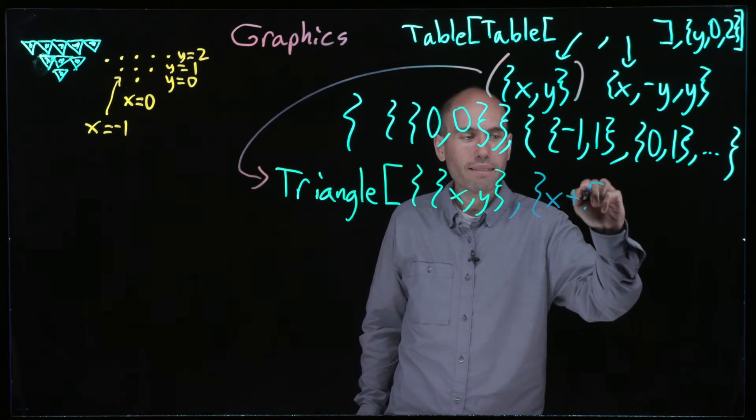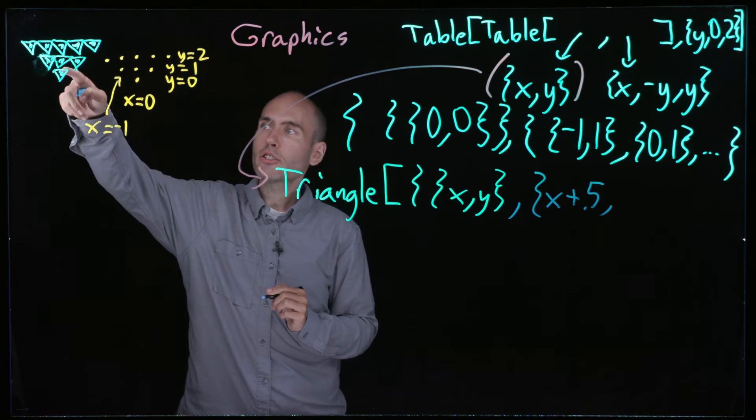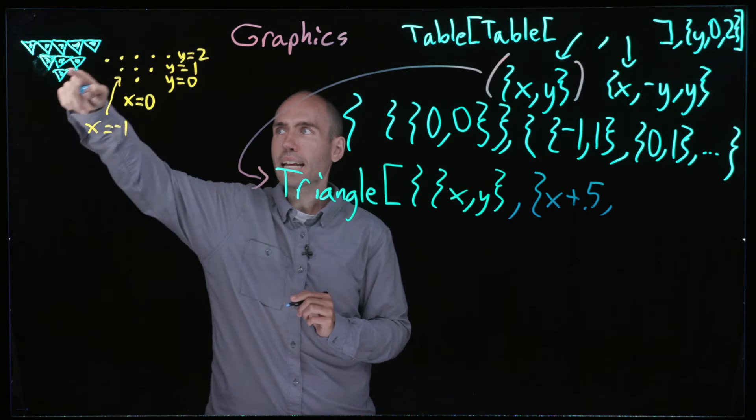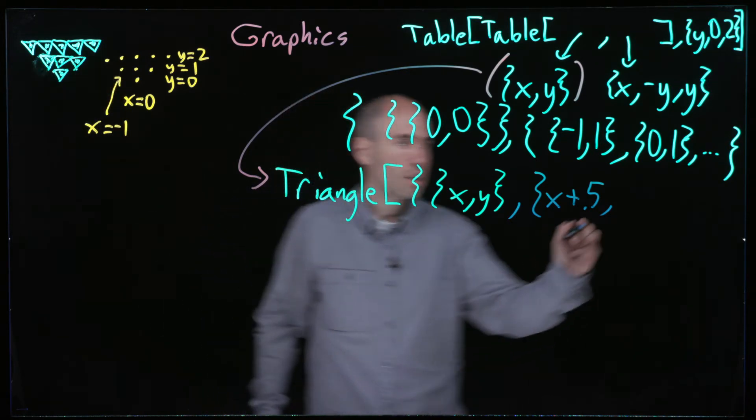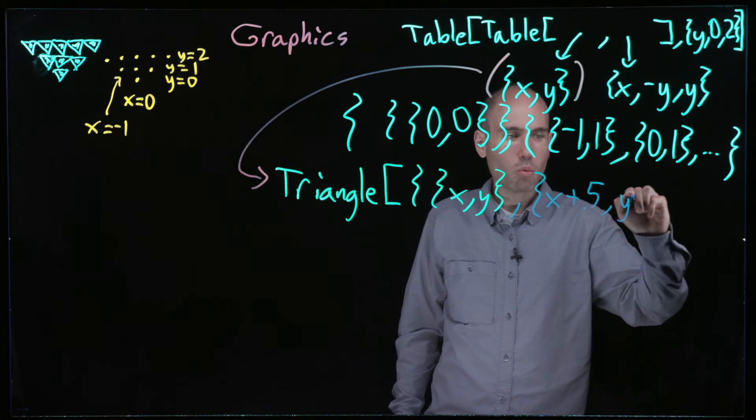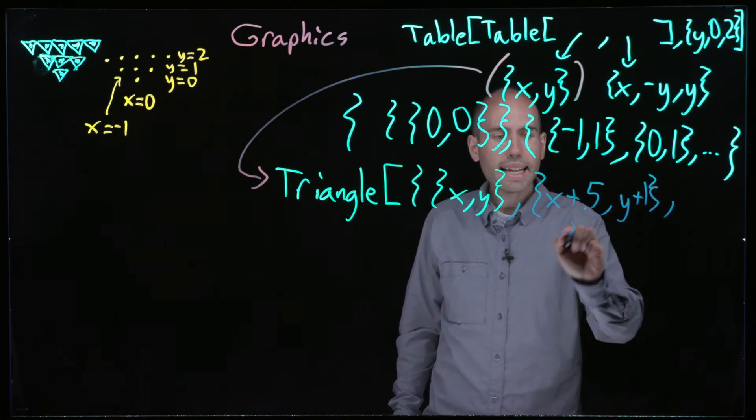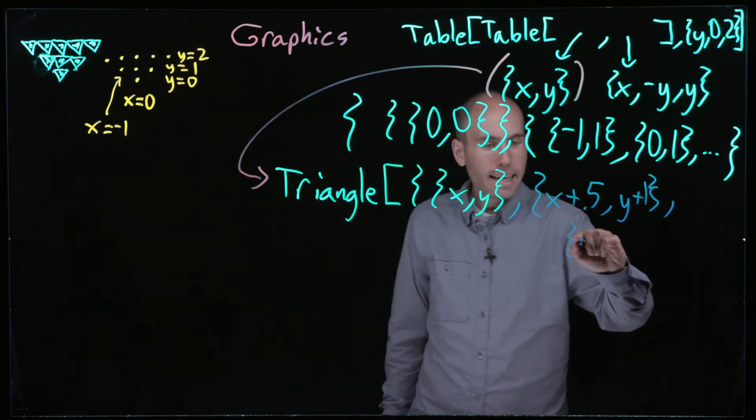This upper right vertex, what is that? It's halfway between x equals zero and x equals one, so it's x equals 0.5. Or if I want to write that in a more systematic way, I want to increase by 0.5. How much does y increase by? Well, it increases by 1. I want it to be at the exact same level as the lower vertices of this next row, so this can be y plus 1.